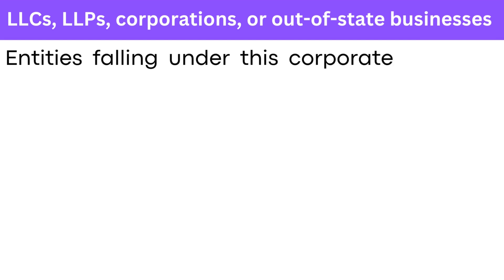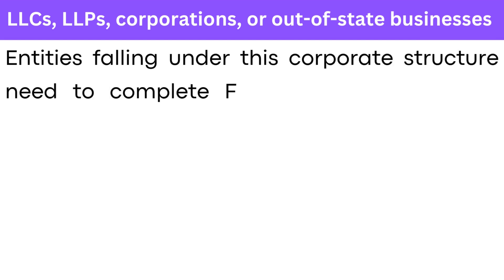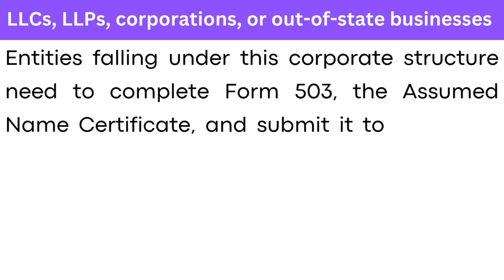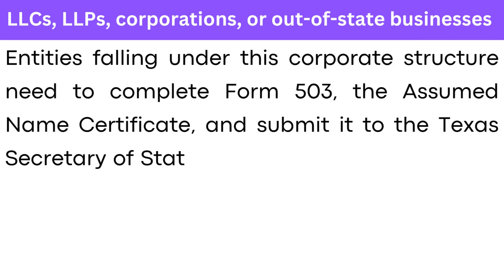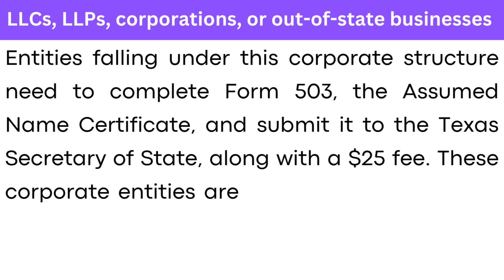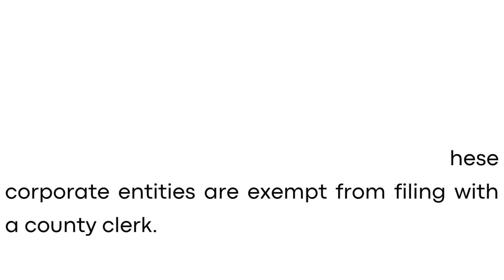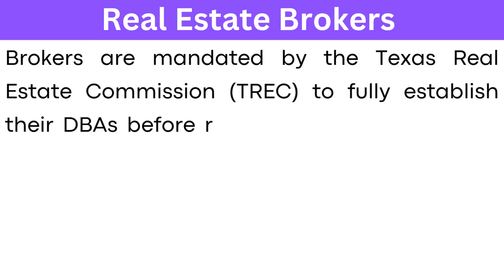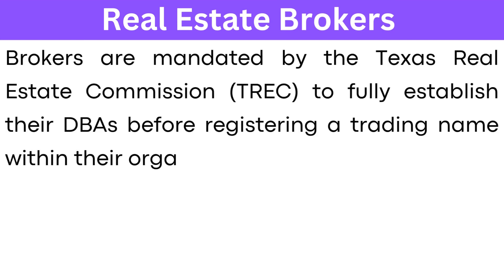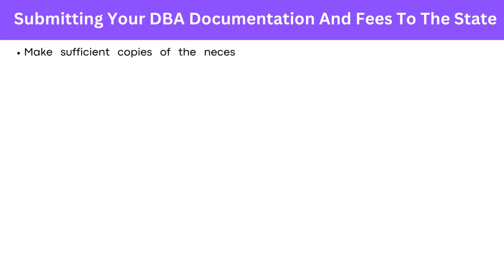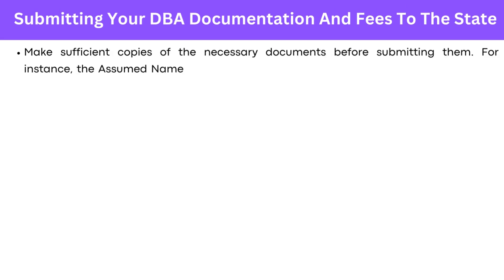Entities falling under a corporate structure need to complete Form 503, the assumed name certificate, and submit it to the Texas Secretary of State along with a $25 fee. These corporate entities are exempt from filing with the county clerk. Brokers are mandated by the Texas Real Estate Commission to fully establish their DBAs before registering a trade name within their organization. Make sufficient copies of the necessary documents before submitting them — the assumed name certificate should be completed twice as required by the Secretary of State.